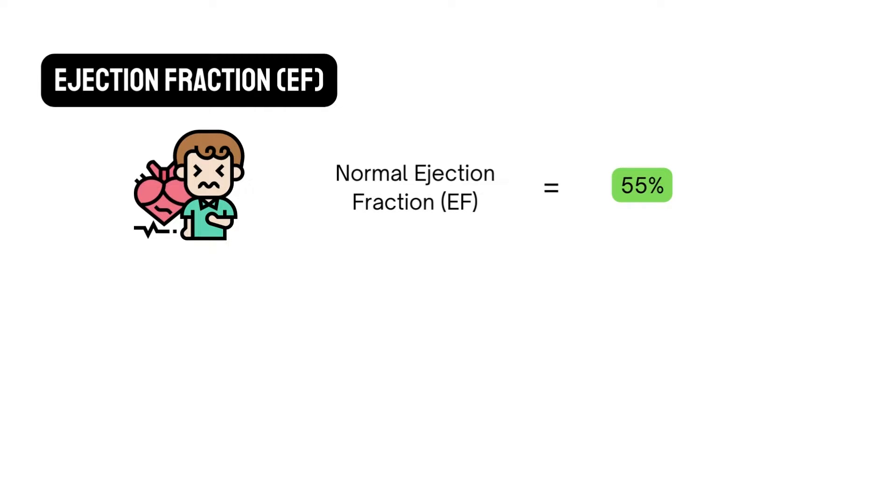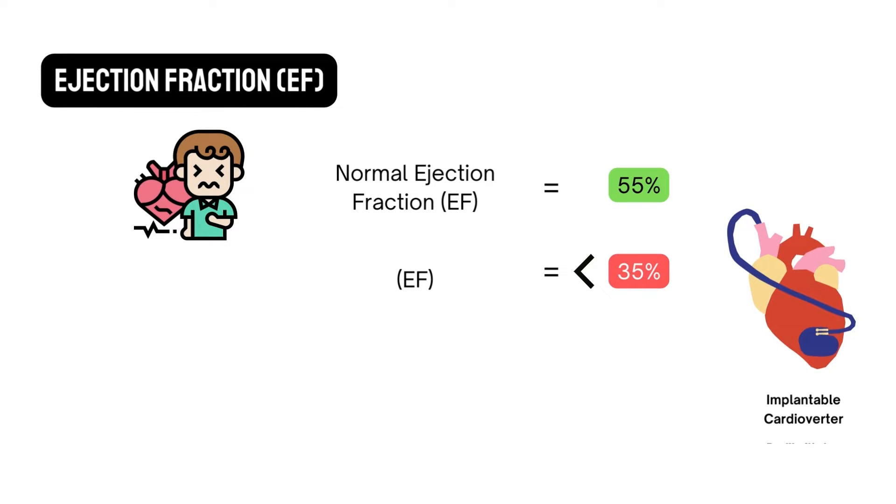A normal ejection fraction is 55%. An ejection fraction of less than 35% puts you at greater risk of sudden cardiac death over the next several years. Consequently, your physician may recommend placing an implantable cardioverter defibrillator for primary prevention, that is to prevent future episodes of sudden cardiac death caused by arrhythmia.